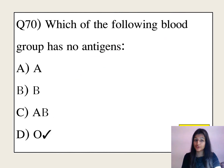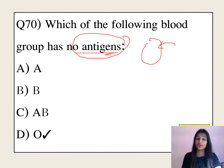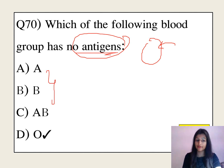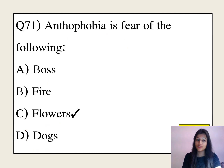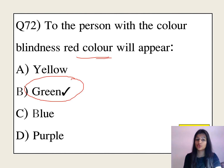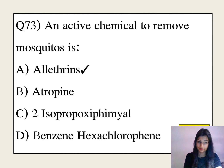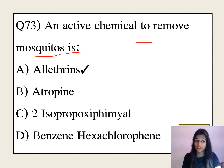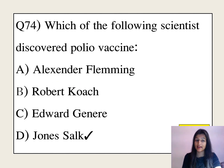Which blood group has no antigen? The answer is blood group O. An active chemical used to remove mosquitoes is allethrin. Which scientist discovered the polio vaccine? The answer is Jonas Salk.